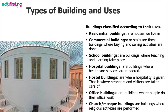Hostel buildings are where strangers and visitors are taken care of. We also have office buildings — just like the administrative block in your school — where people do their office work. We also have church and mosque buildings, where religious activities are performed. There are several other types of buildings classified by use, and you can go and look around at all those buildings on your own.